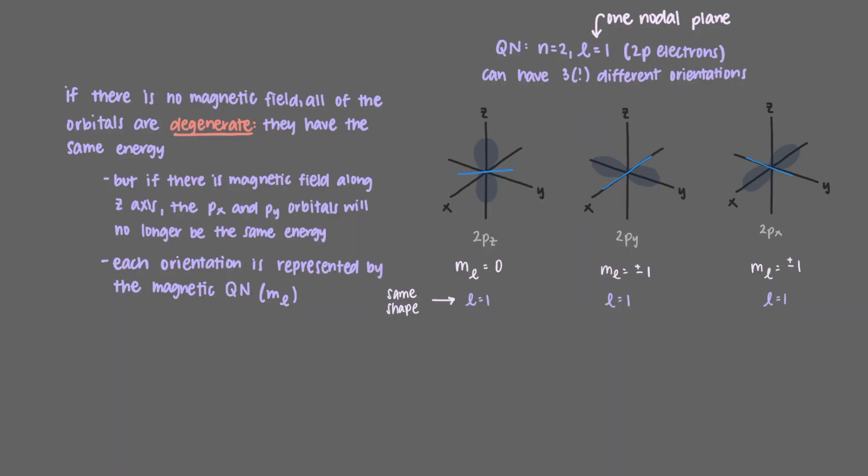They're also all the same size since they have the same principal quantum number, n equals 2. But because their m sub l values are different, their orientations in 3D space are different.